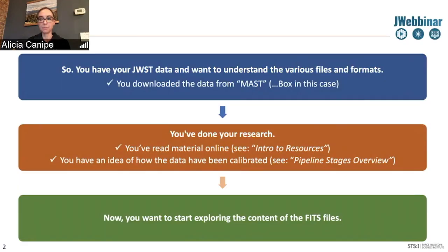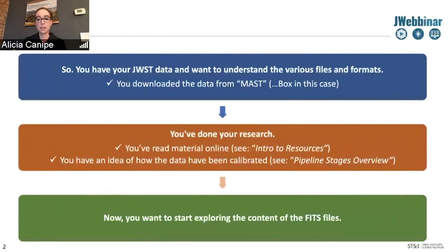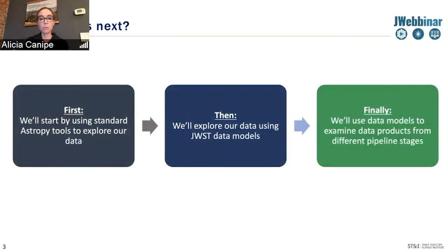We wanted to recap before jumping into the exercise. This is the general flow we're hoping you go through: you have your data, and you want to understand the files and the formats. For this webinar you're getting data from Box, but in the future from MAST. You've done your research, have material online, and have an idea of how the data have been processed thanks to Carl's overview. Now we want to start exploring the content of your data products — first using standard astropy tools to explore some JWST data products, and then we'll explore the data using JWST data models.